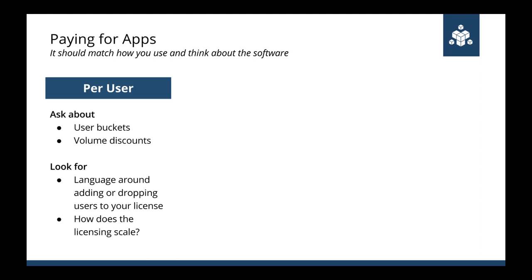Per-user licensing takes the number of users at face value — if 10 employees in finance get 10 licenses, you can do that by machine or concurrent users. Many vendors create packages that scale for larger enterprises by costing less per user for larger groups. Pay attention to that, but also look at how licensing plans scale: if you add or lose a bunch of users through company changes, are you able to scale up? Or are you stuck paying more for fewer users than intended until the end of your contract year?